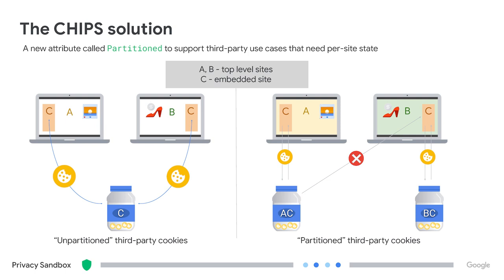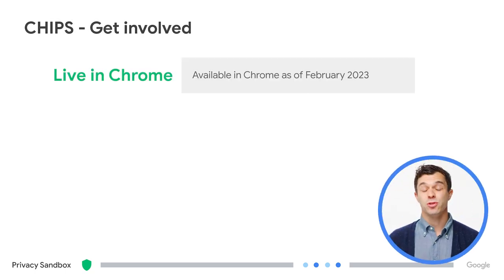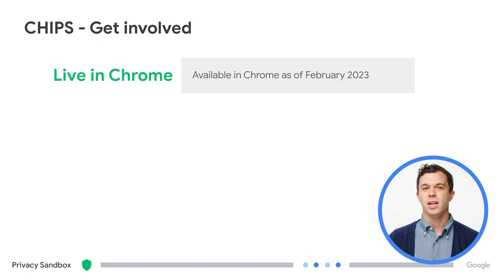This is done via a double-key partition, which creates cookie jar AC. C can continue to offer its functionality without being able to track users. So when a user navigates to site B, there's a new partition cookie jar BC. If CHIPS is the thing you need, you can try it out now — the CHIPS team has shipped the feature and it is available in Chrome version M110.